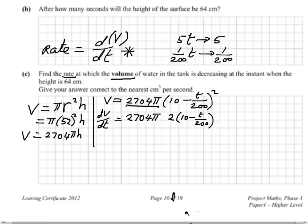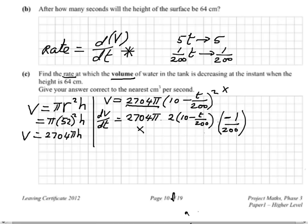So to summarise: the constant 2704 pi stays as it is, then we brought the square's power of 2 down in front, and finally — because of the chain rule — we differentiate what's inside the bracket separately. Differentiating the 10 gives zero; differentiating minus t over 200 gives minus 1 over 200.